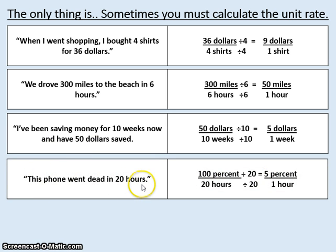This phone went dead in 20 hours. So it went from a hundred percent, a hundred percent depleted in twenty hours. Reduce it by twenty, five percent depletion per one hour. Here is your unit rate.